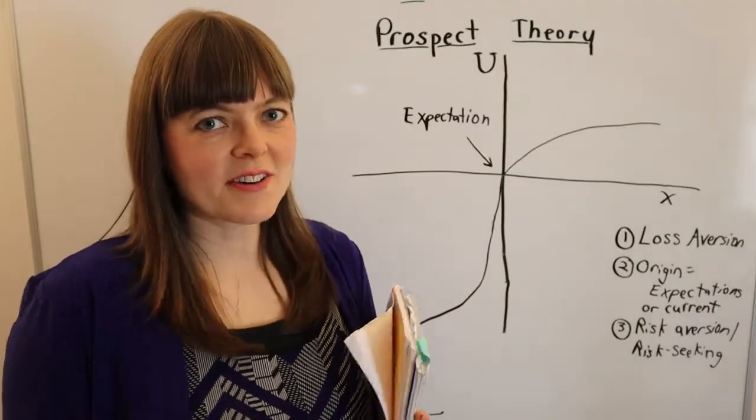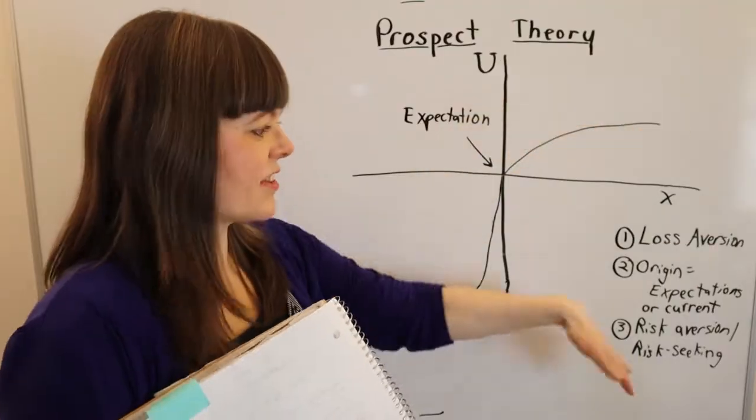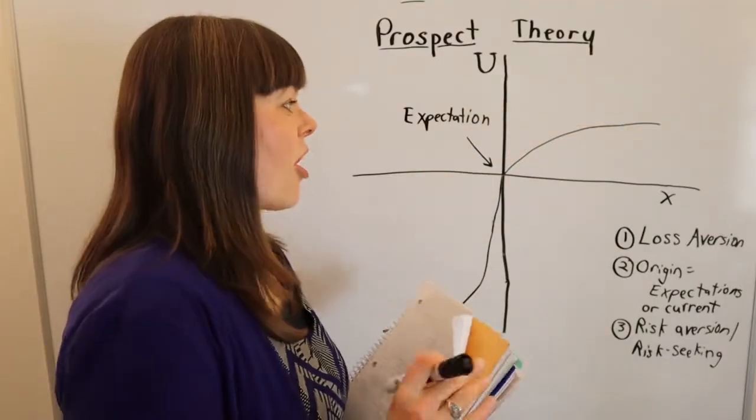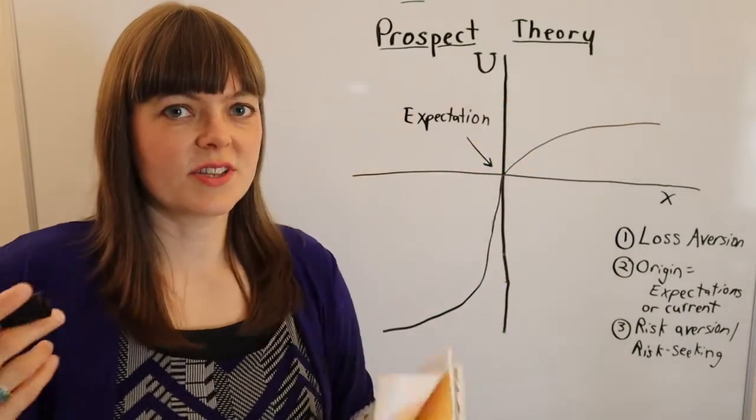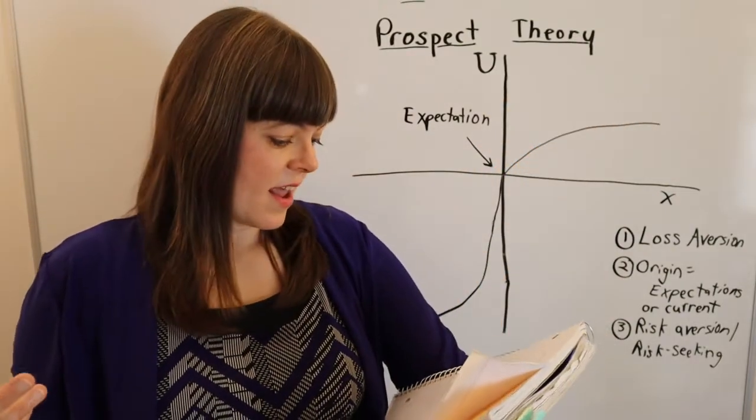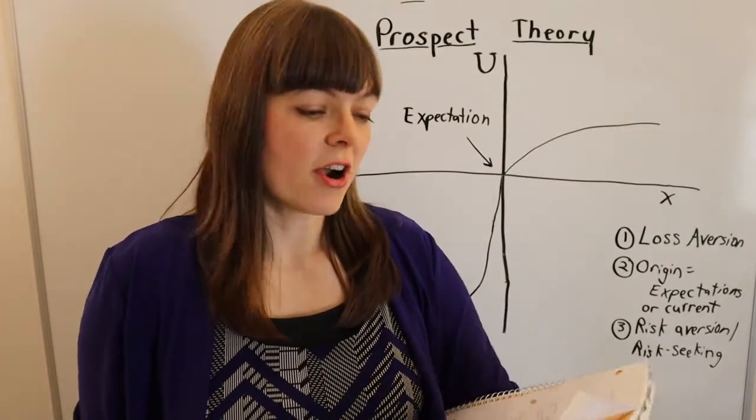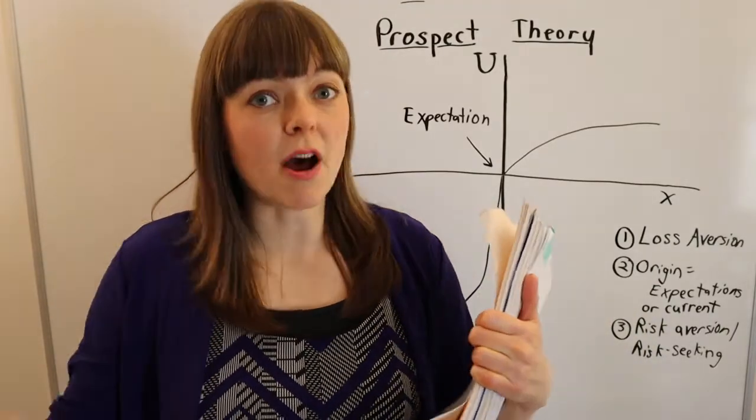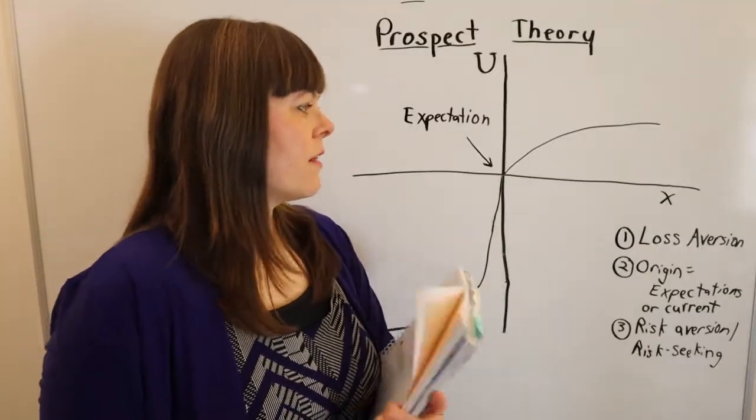So that's the second part of prospect theory. Now, the third part, if you've done some research on the shapes of these graphs and loss aversion and risk-seeking behavior, you should already be able to see that the concave shape is associated with risk aversion and the convex shape is associated with risk-seeking behavior. And there's lots of experiments that model this and that show that this is actually how people feel.